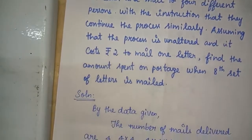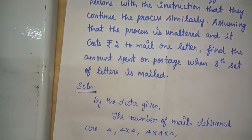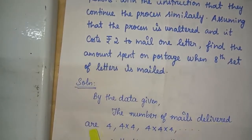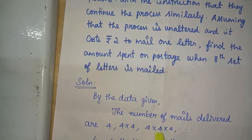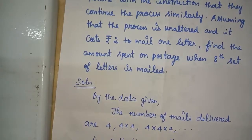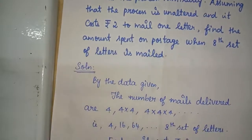By the given data, the number of mails delivered are 4. The first person mails to 4 persons. Then each of those 4 persons mails to 4 more, giving 16, then 64, and so on — up to the 8th set of letters.